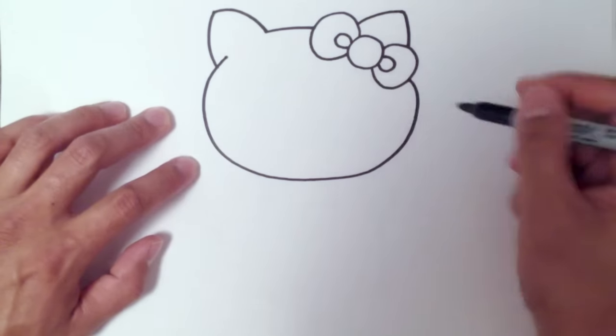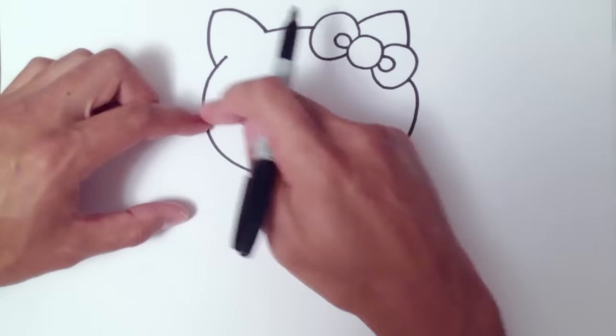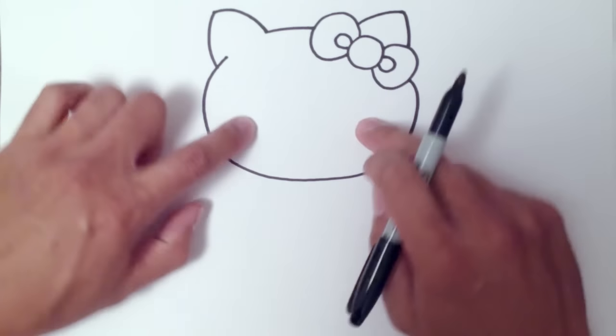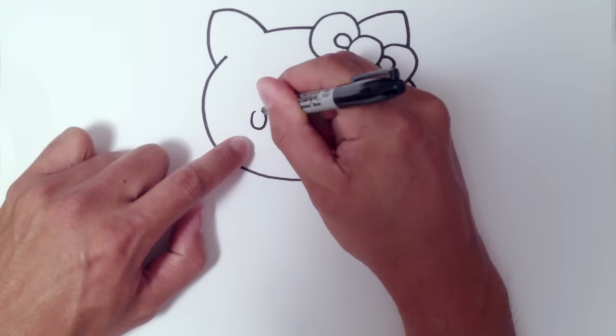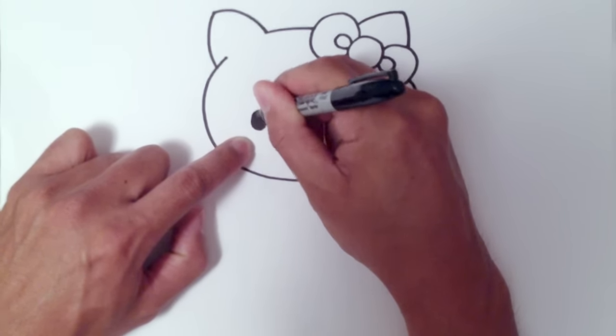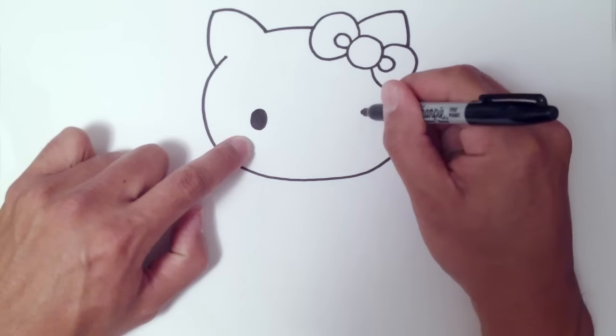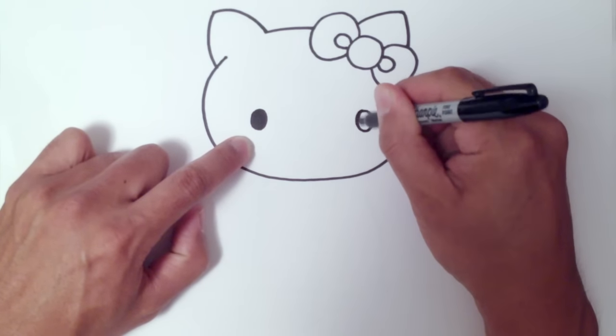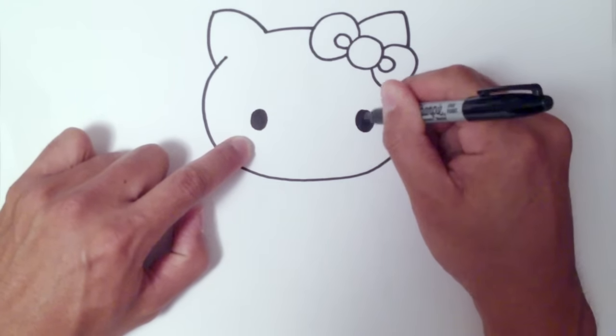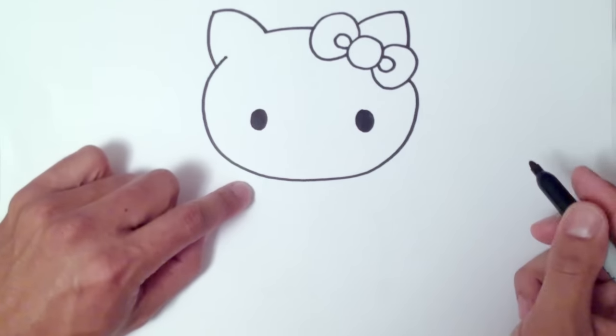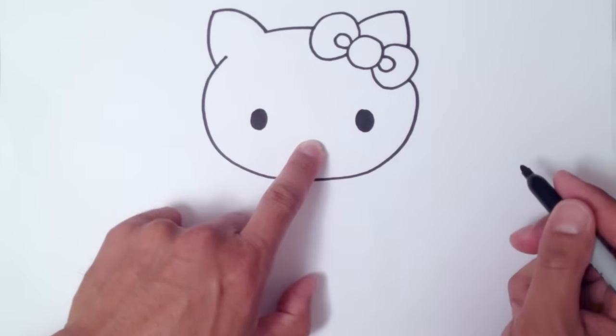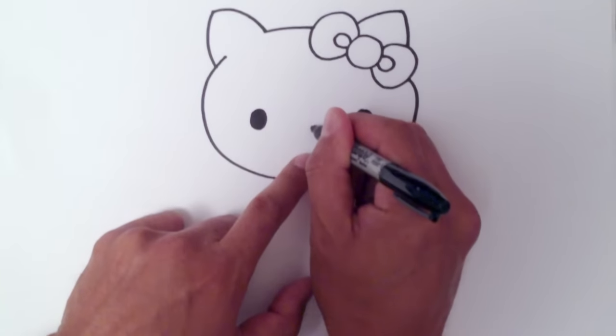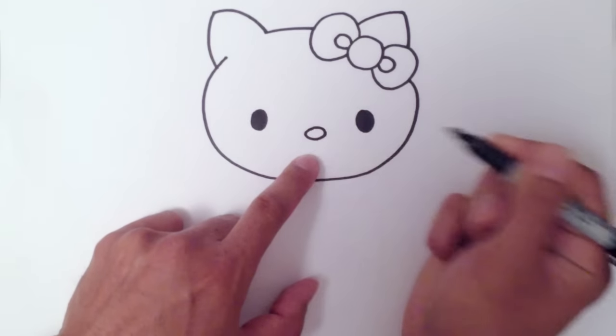Now I'm going to draw her eyes. Her eyes are just below the center of the circle and they're quite wide apart. Right around here, I'm going to draw one big eye and then the other eye. Her nose goes in between here. It's a little button.